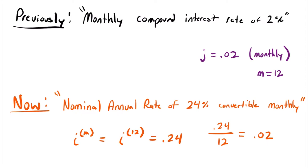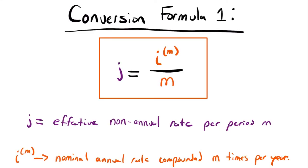This leads us to our first conversion formula from nominal interest rates to other interest rates. To find the effective non-annual rate per period m from a nominal annual rate, we take that nominal annual rate and divide it by the number of periods m. So for a nominal annual rate of 24% divided by 12 periods, we get 0.02, or a 2% monthly compounded rate.